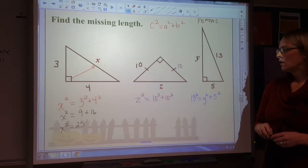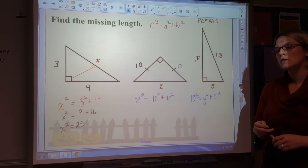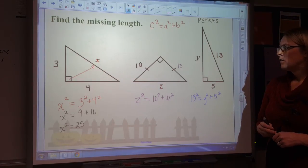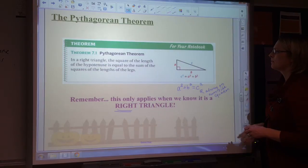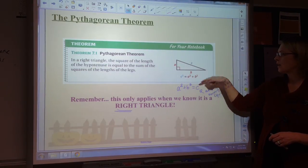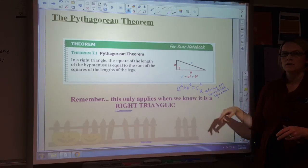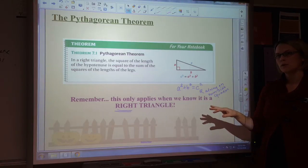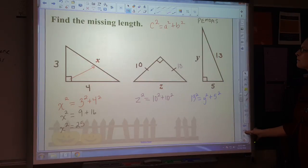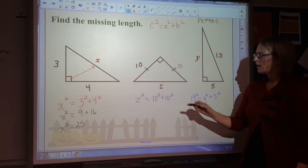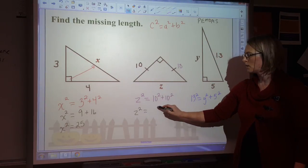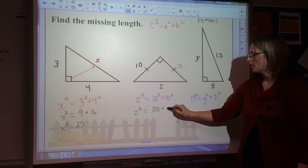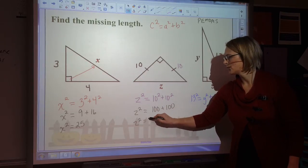Why does the last one have to be C? The Pythagorean theorem says C squared equals A squared plus B squared, and for the hypotenuse we're just arbitrarily using the letter C — but that one's always by itself on one side of the equation. For the second equation: Z squared equals 10 squared plus 10 squared, which is 100 plus 100, so Z squared equals 200.